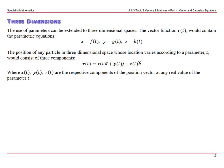We have the function of t for x, y, and z. The position of any particle in three-dimensional space whose location varies according to the parameter t would therefore consist of the three components: R of t equals x of t i, plus y of t j, plus z of t k.